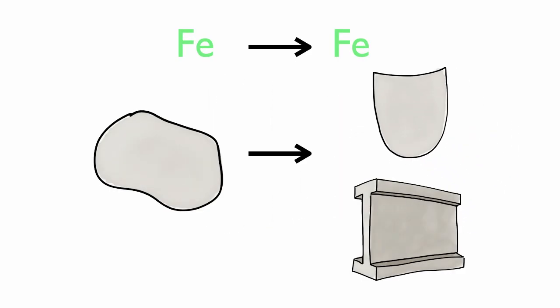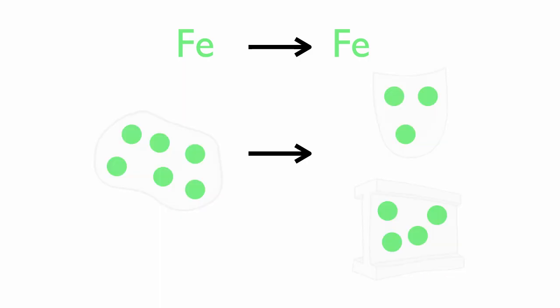Another example of a physical change would be bending iron metal. Iron can be made into I-beams or pressed into shapes. Whether the iron is in a beam or in a shape, it still is Fe atoms, just in a different shape.